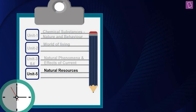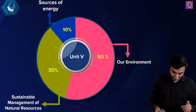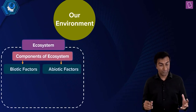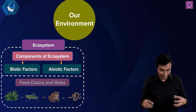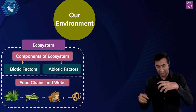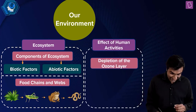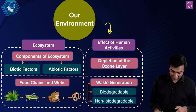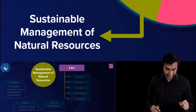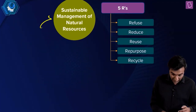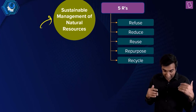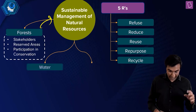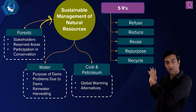On to the last unit — Natural Resources. Unit 5 has sources of energy, our environment, and sustainable management of natural resources. Mostly 'our environment' was tested in 2019. You've got the ecosystem with biotic (living) and abiotic (non-living) components, food chains and food webs, massive human impact on the environment — depletion of the ozone layer — and waste generation: biodegradable and non-biodegradable. For sustainable management: the five R's — refuse, reduce, reuse, repurpose, recycle. You've got forests, water, coal and petroleum.